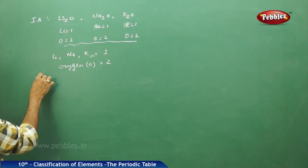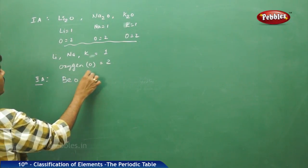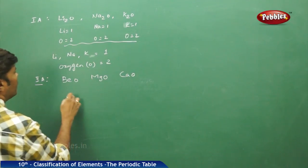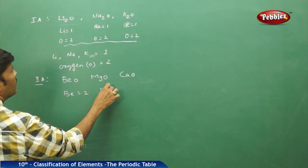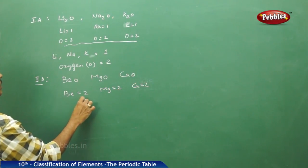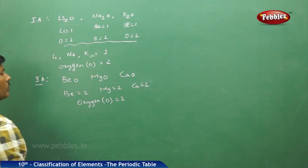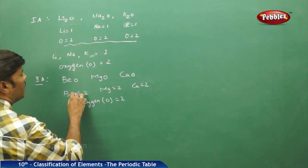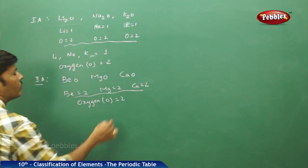Similarly, if you take group 2A: beryllium oxide, magnesium oxide, and calcium oxide show that beryllium, magnesium, and calcium all have a valency of 2, and oxygen also has a valency of 2. It is clearly understood that the valency of beryllium, magnesium, and calcium is the same with respect to oxygen.